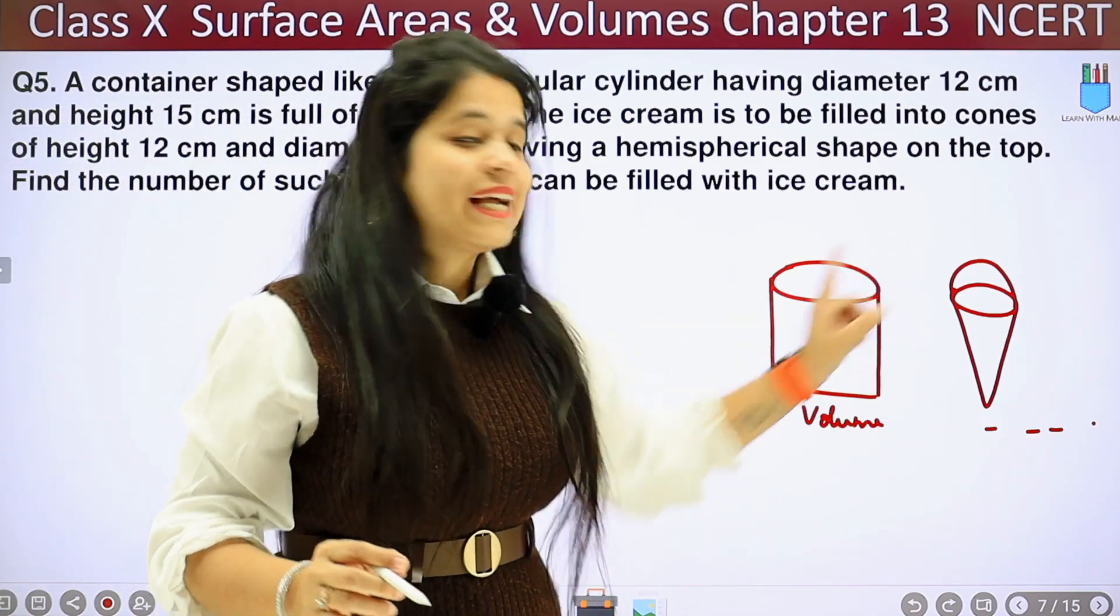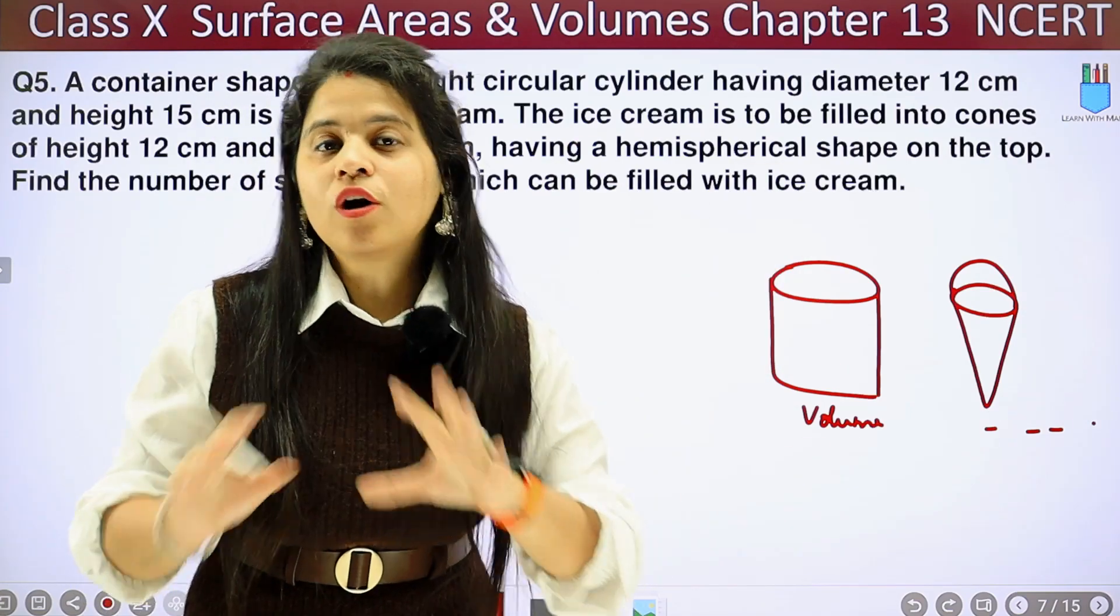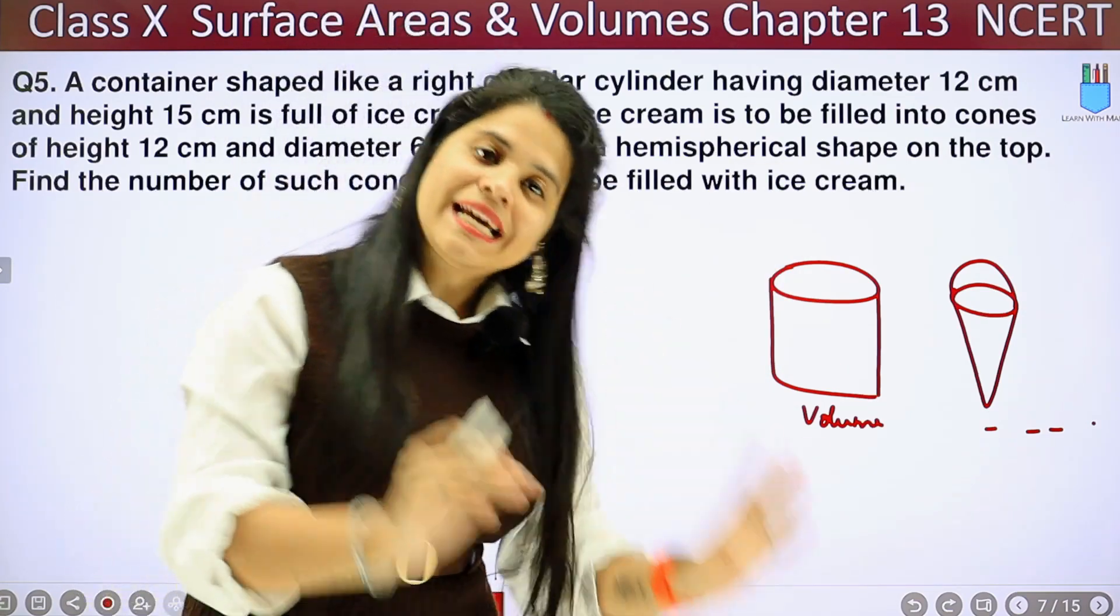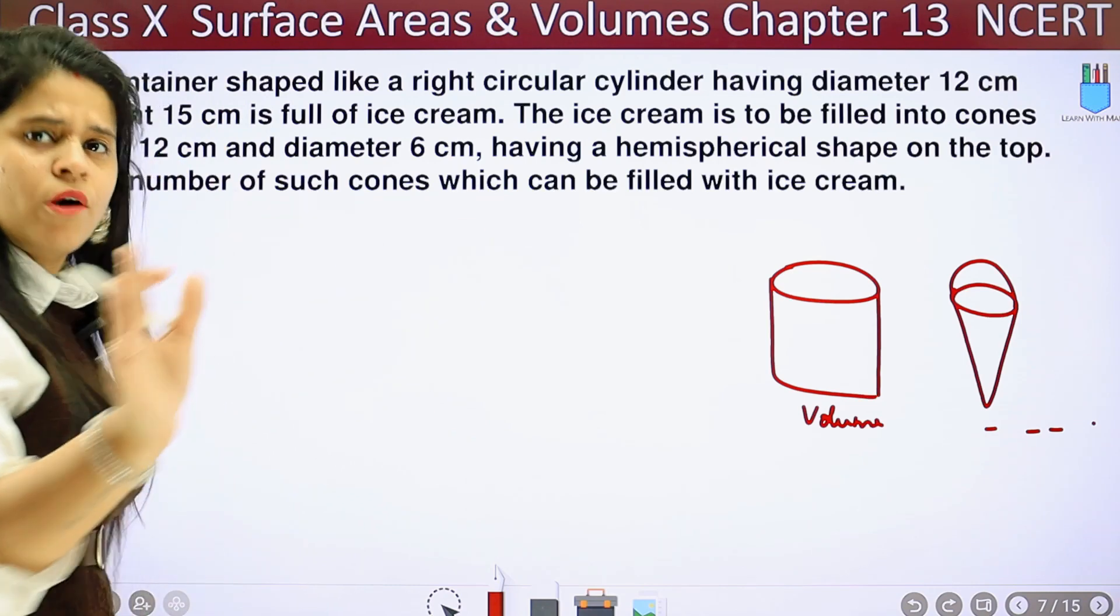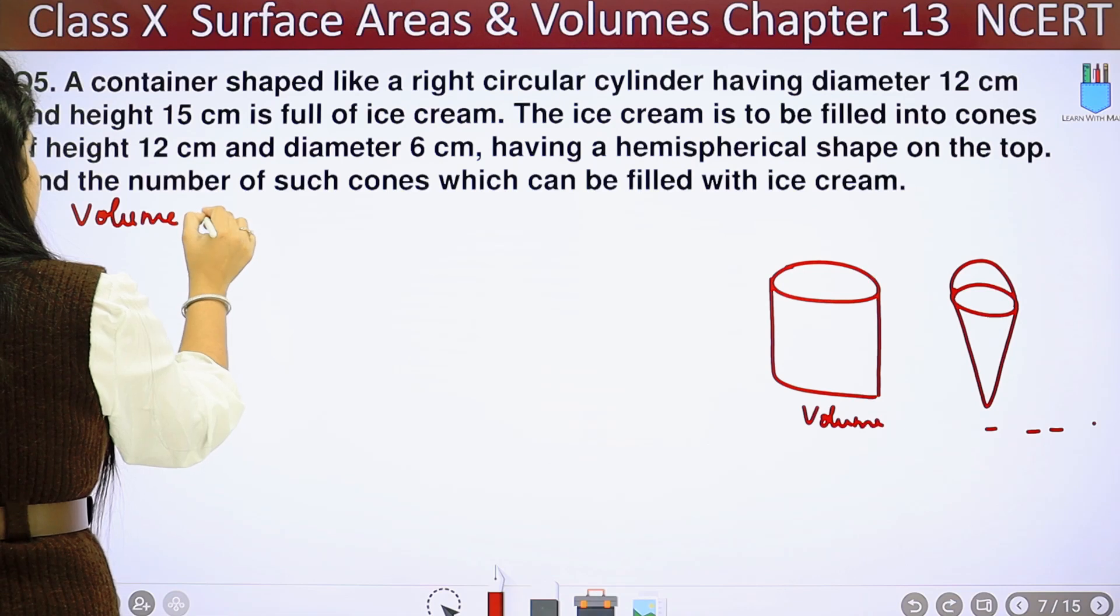Now we have two ways to do this. First, remove the volume, then remove the cone volume, and then divide to find the number of cones. This is a simple way. We will do this. I will also show you a short formula. So we are starting.